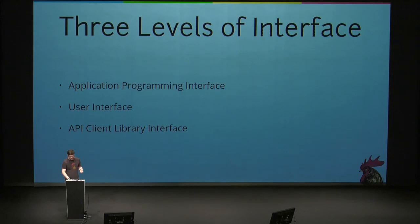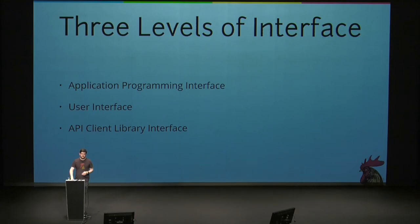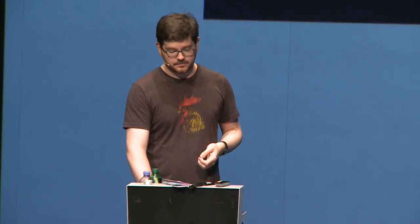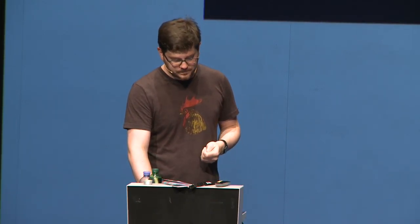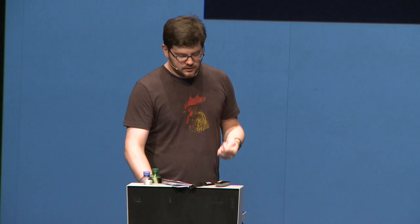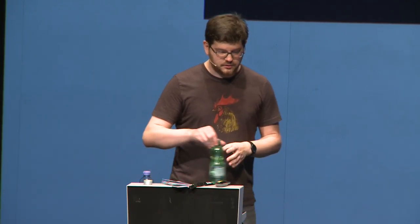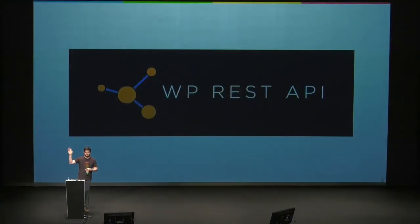The three layers are the API itself, the user interface — what the user is going to be interacting with, whether that user is a writer or a reader — and then the glue, the user and client libraries that hold them together. As you heard, who was in Joe Hoyle's talk this morning?